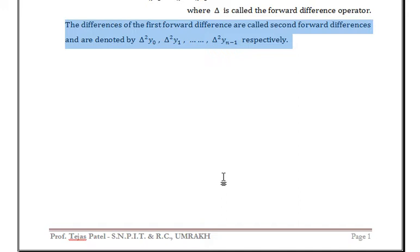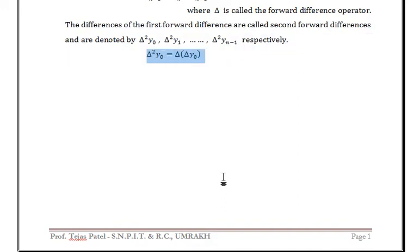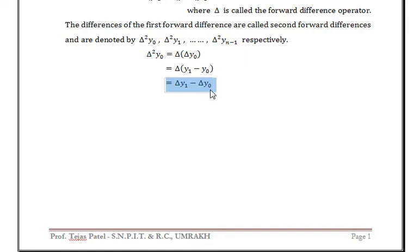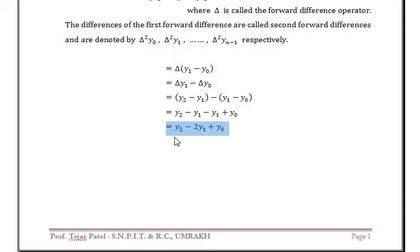The differences of the first forward differences are called second forward differences and are denoted by Δ²y0, Δ²y1, up to Δ²yn-1 respectively. Now Δ²y0 can be written as Δ(Δy0), and since Δy0 = y1 - y0, we have Δy1 - Δy0. Since Δy1 = y2 - y1 and Δy0 = y1 - y0, simplifying gives Δ²y0 = y2 - 2y1 + y0.